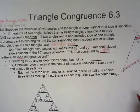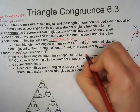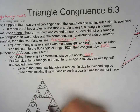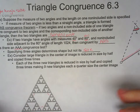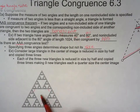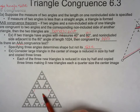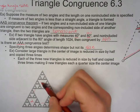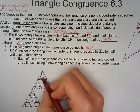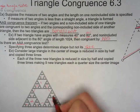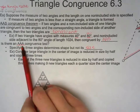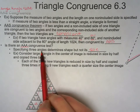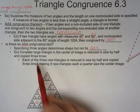Is there an angle-angle-angle (AAA) congruence test? No — specifying three angles determines shape but not size. For example, a big triangle can be cut in half and copied, making smaller triangles with all the same angles but different sizes. So AAA does not exist as a congruence test, because it only tells you the angles but not the size of the triangles. That's why it's a no-no.